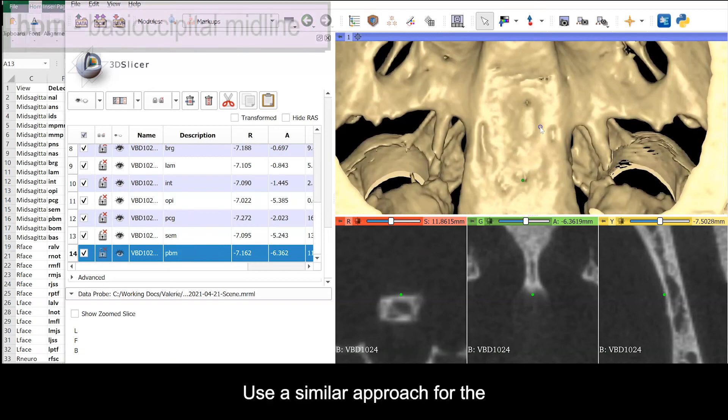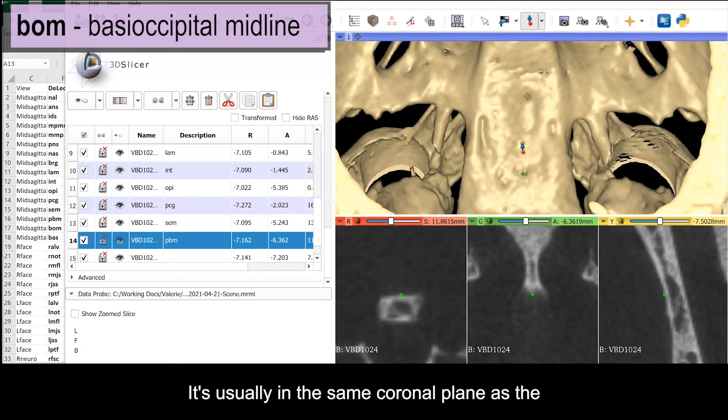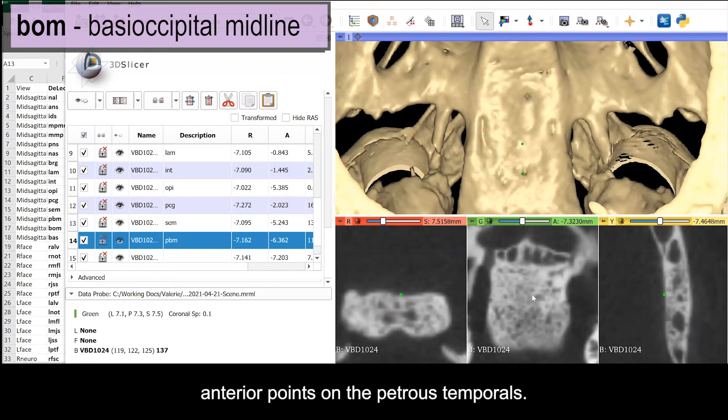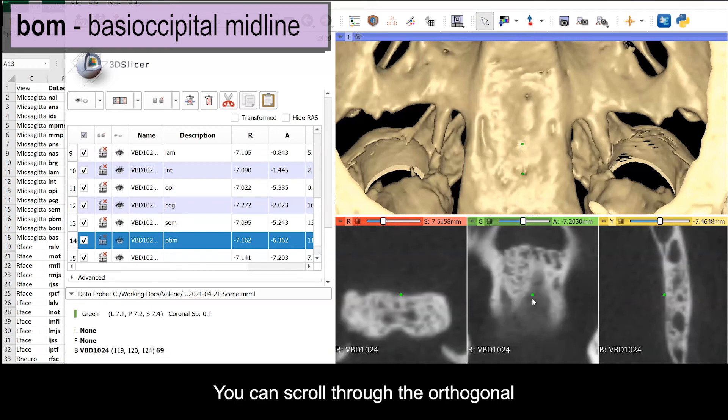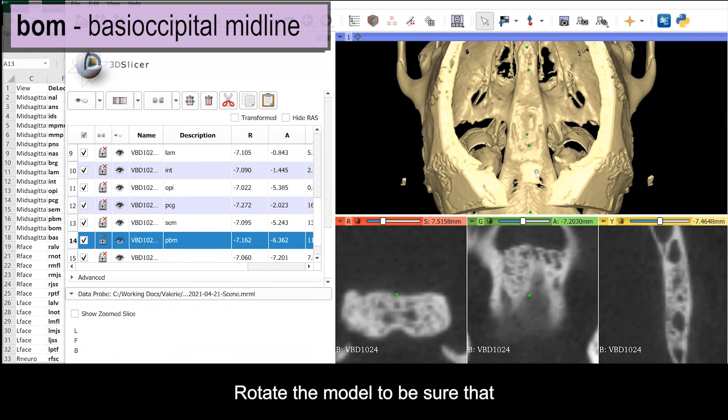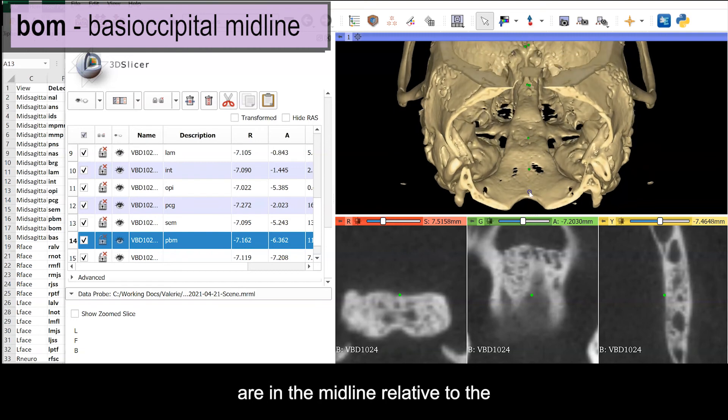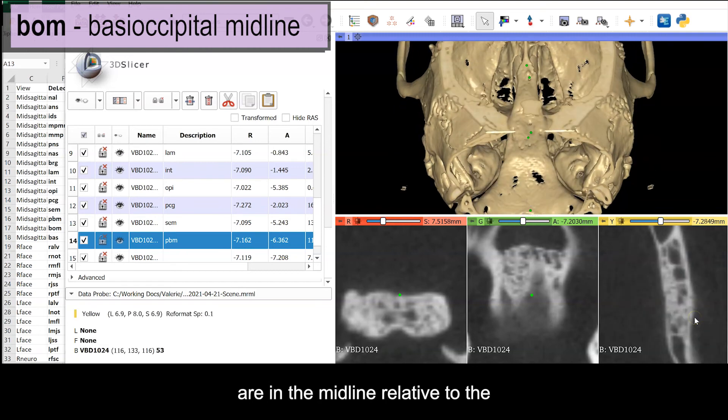Use a similar approach for the basy occipital synchondrosis. It's usually in the same plane as the anterior points on the petrous temporals. You can scroll through the orthogonal views to find and confirm the position. Rotate the model to be sure that both the intrasphenoidal and the basy occipital synchondrosis are in the midline relative to the overall structure of the cranial base.